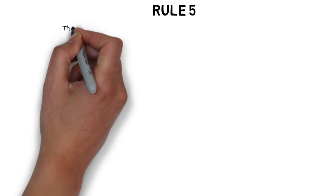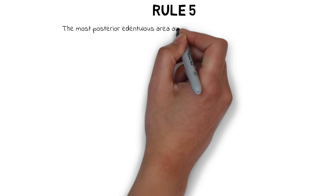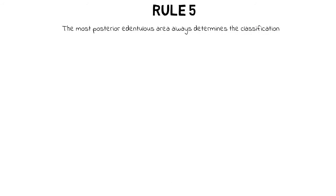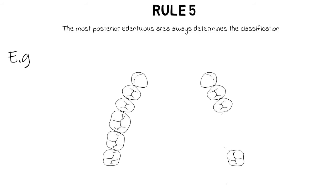Rule 5 states that the most posterior edentulous area always determines the classification. So when there are two different edentulous areas, we classify according to the most posterior one. In the given example, this results in a classification of Class 3 modification 1.